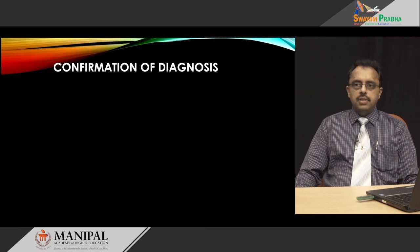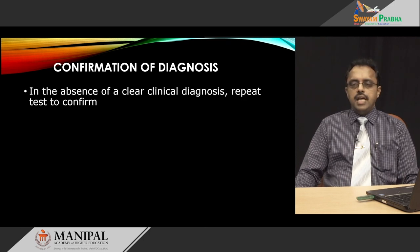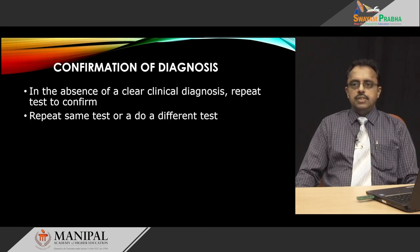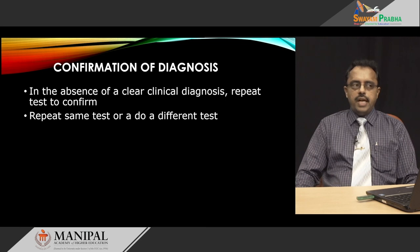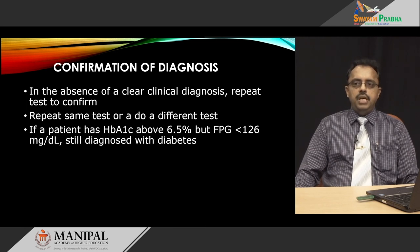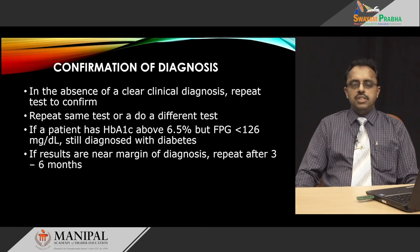Regarding confirmation of diagnosis: it is rarely that just one test is enough to diagnose diabetes. In the absence of a clear clinical picture, any abnormal result must be repeated — the same test such as fasting plasma glucose, 2-hour plasma glucose, HbA1c, or random plasma glucose should be repeated, or a different test done to confirm the diagnosis. For example, if a patient has HbA1c above 6.5 percent but fasting plasma glucose less than the cutoff of 126, they are still diagnosed with diabetes. If results are near the margin of diagnosis, the test needs to be repeated after 3 or 6 months.